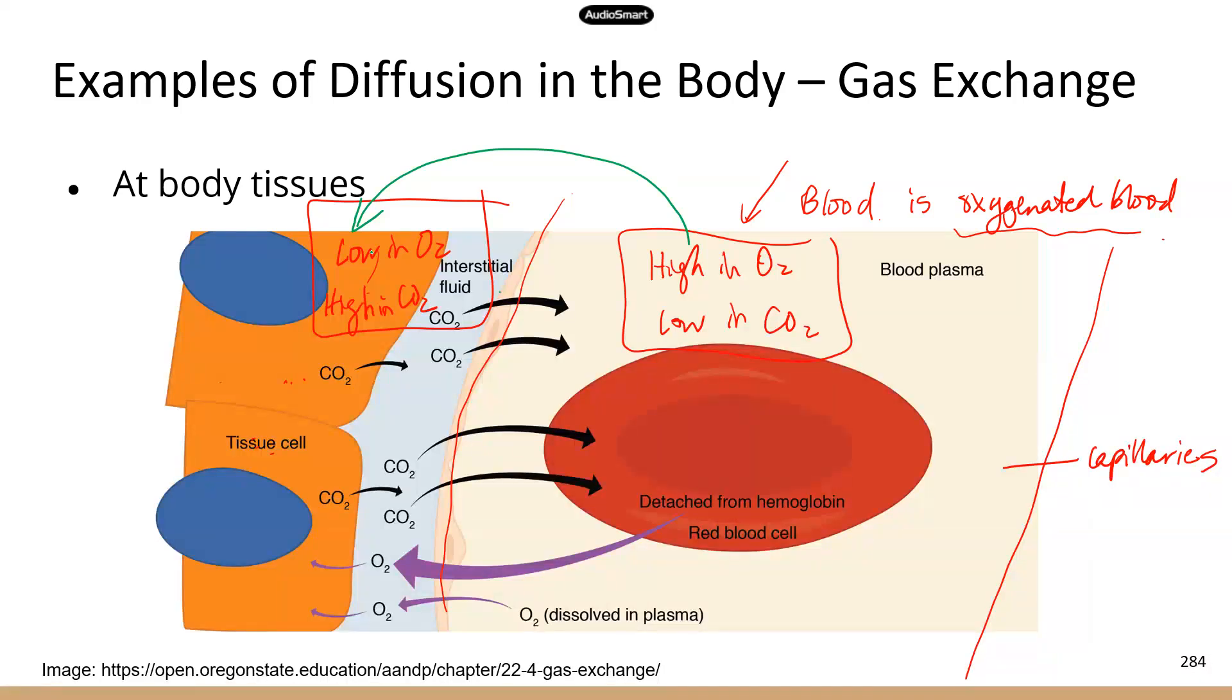And then carbon dioxide is going to be doing the opposite direction. Carbon dioxide is going to move out of the cell, across the cell membrane, across the interstitial fluid, across the capillary wall, and into the red blood cells. So this is what's going on at body tissues.